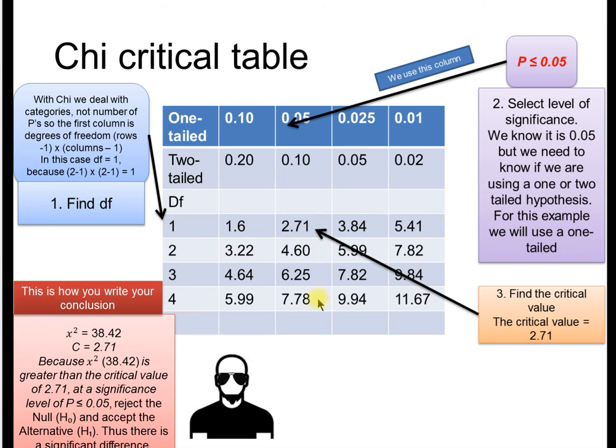We've got a chi of 38.42, a critical of 2.71. Now, what we've got to decide is, is our chi-squared greater or equal to that number? Hopefully you've guessed it. It is bigger. This is greater than this. Because chi-squared is 38.42, greater than the critical value at a significance level of p 0.05.